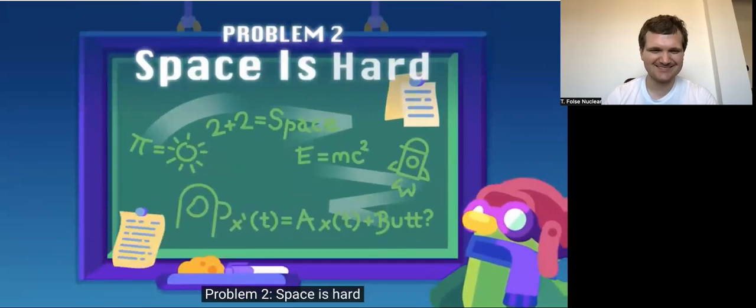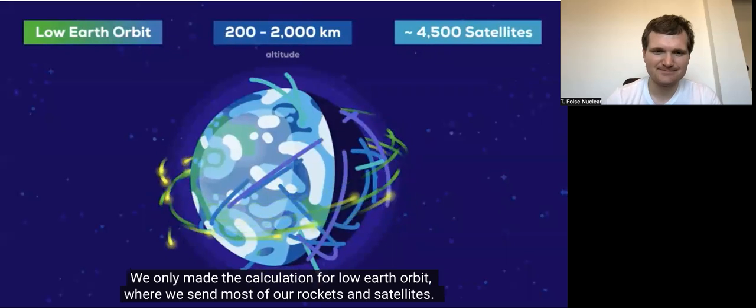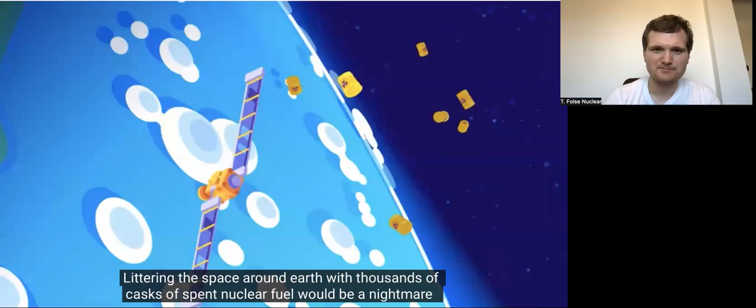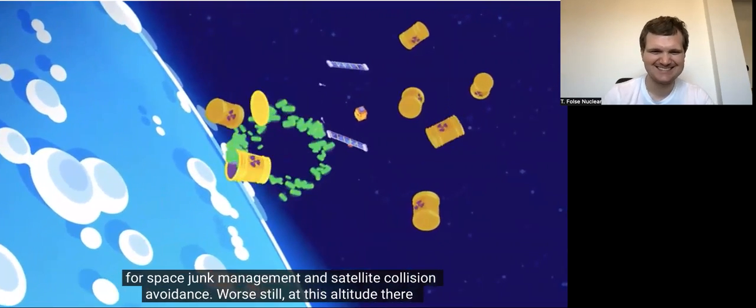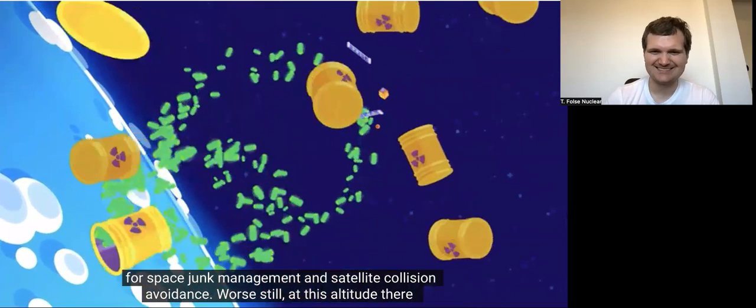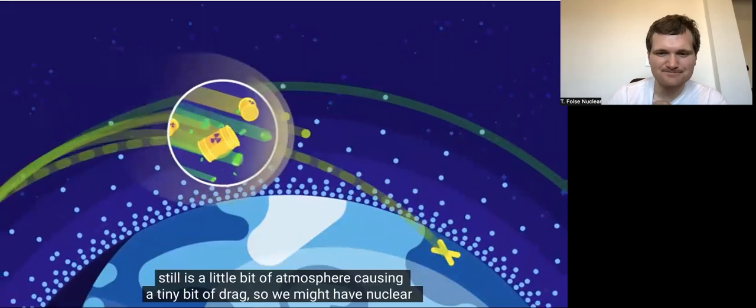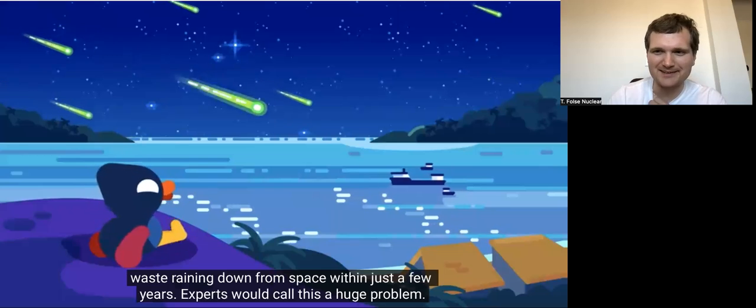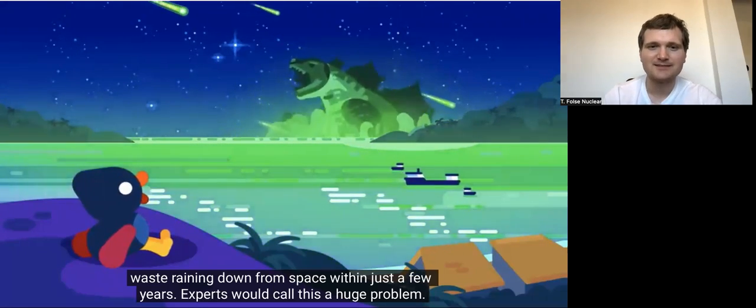Problem two: space is hard. We only made the calculation for low Earth orbit, where we send most of our rockets and satellites. Littering the space around Earth with thousands of parts of fuel would be a nightmare for space junk management and satellite collision avoidance. Worse still, at this altitude, there's still a little bit of atmosphere causing a tiny bit of drag, so we might have nuclear waste raining down from space within just a few years. Experts would call this a huge problem.